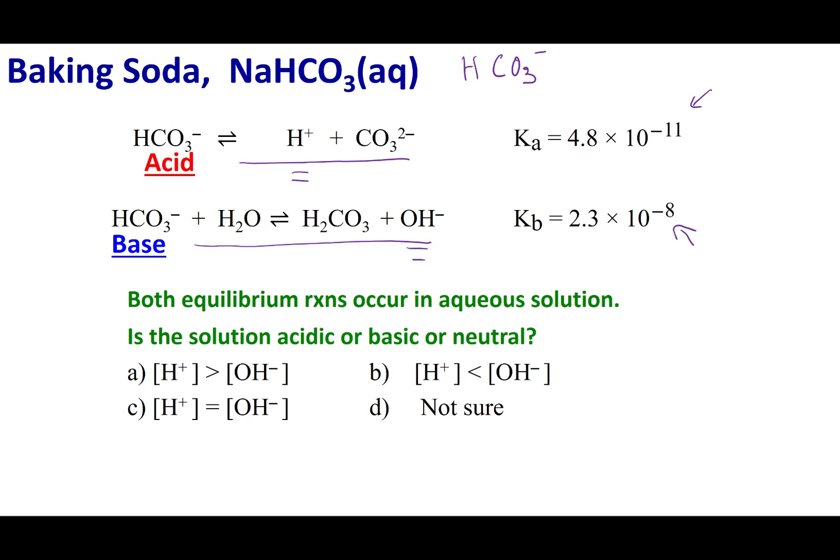The bigger the number is, the more product I'm going to make. What I see here is that the Kb is bigger than the Ka. So that means I'm making more OH- than I am of H+. In this case, I'm making more OH-.